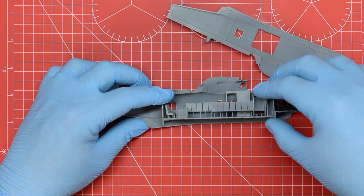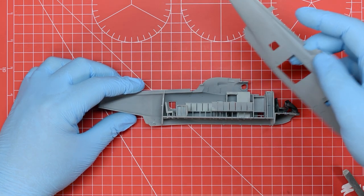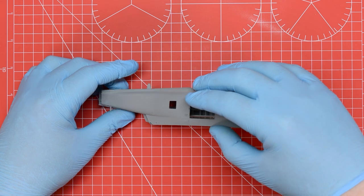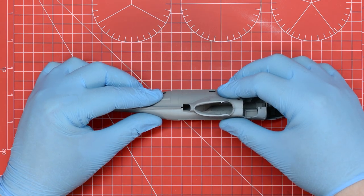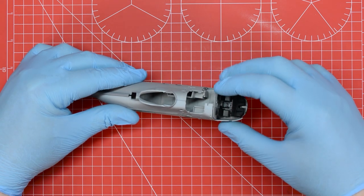We can now start test fitting the interior between the two halves of the fuselage. If we've cleaned everything up properly and everything's nicely aligned there should be no gaps when we press the two halves together and no obstructions preventing us from closing up the model.